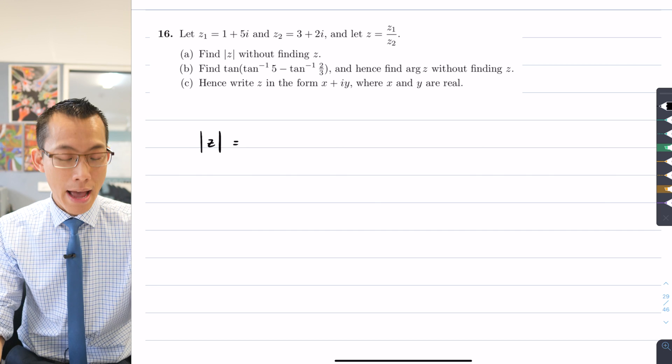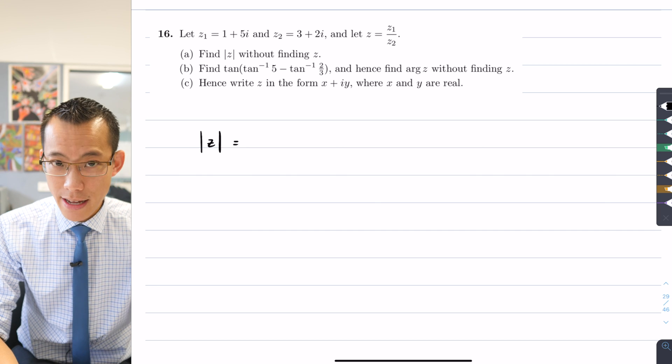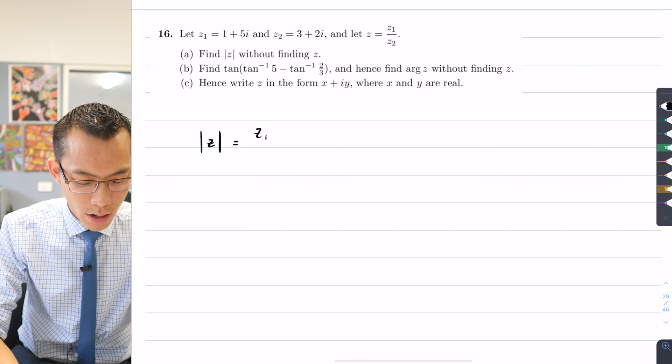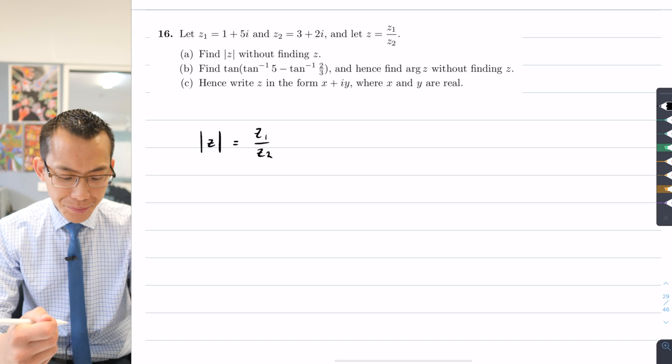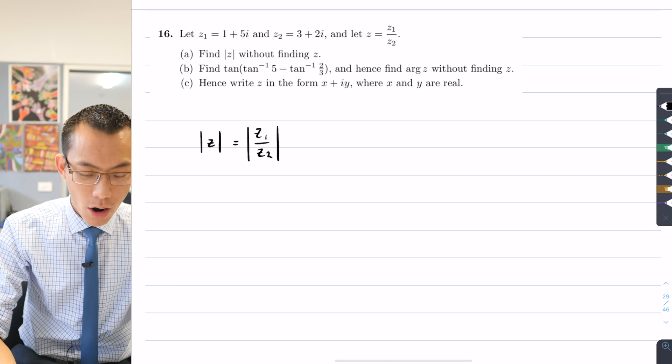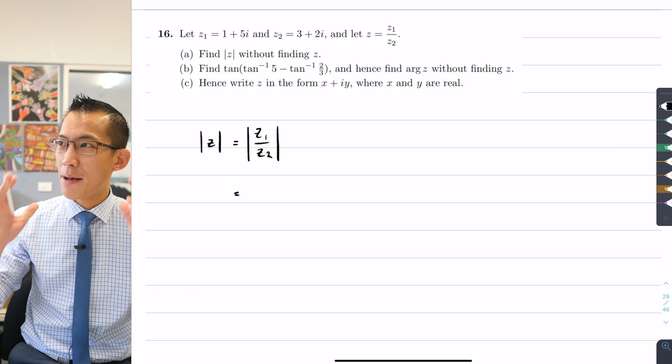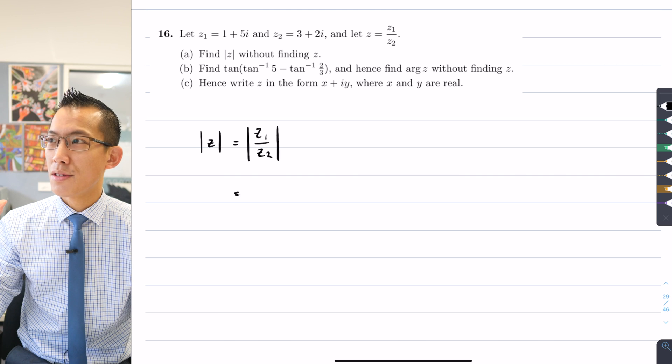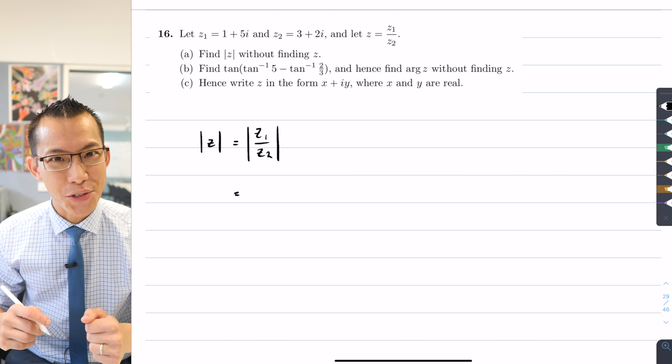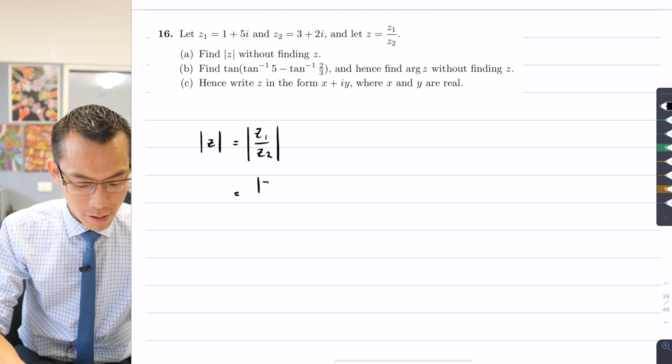You can see that in very simple algebraic terms: because z is defined as z1 on z2, therefore the modulus of z is just the modulus of that fraction. One of the things about the absolute value is that the absolute value of a quotient is the quotient of the absolute values. So I can actually just do these two separately like so.